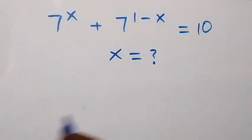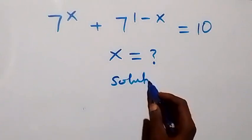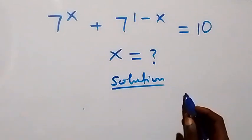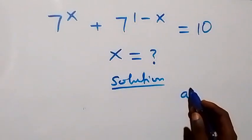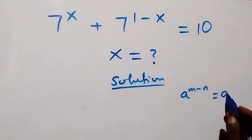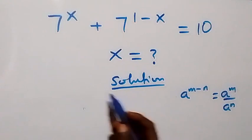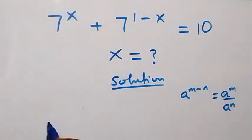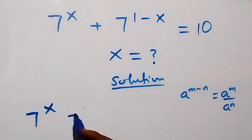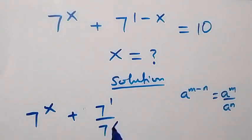Hello, you're welcome. How to solve this nice exponential equation. From the law of indices, when we have a raised to power m minus n, it is the same thing as a raised to power m divided by a raised to power n. From here, we can rewrite what we have, and this becomes seven raised to power x plus seven raised to power one, over seven raised to power x.